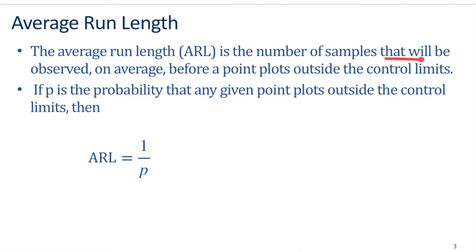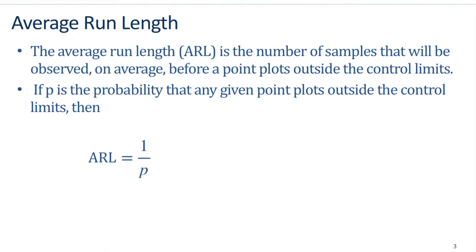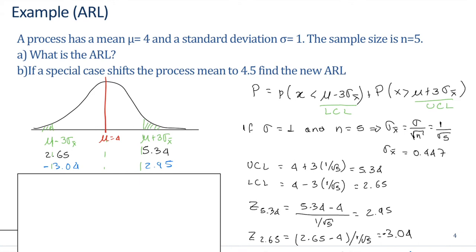We can say that the ARL is equal to 1 over p, which is 1000. The Average Run Length (ARL) is the number of samples that will be observed on average before a point plots outside of the control limits. If p is the probability of a given point plotting outside of the control limits, then the ARL is equal to 1 over p.